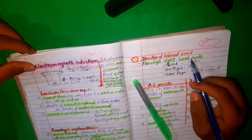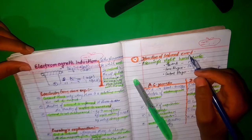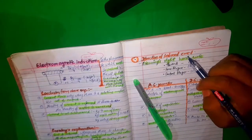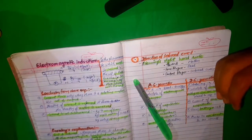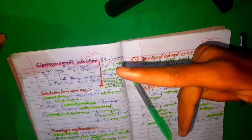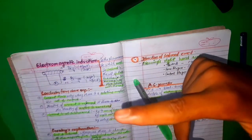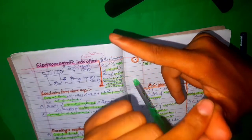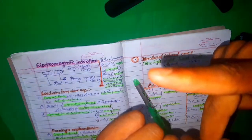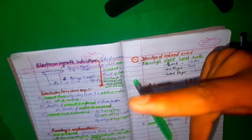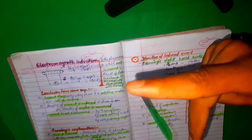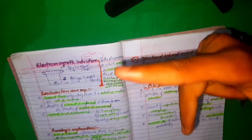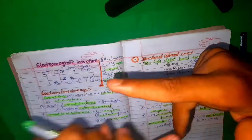To find the direction of the induced EMF, we use Fleming's right-hand rule. In this rule: the thumb represents motion or force, the index finger represents the magnetic field, and the middle finger represents the induced current. Using this we can find the direction of the induced EMF.